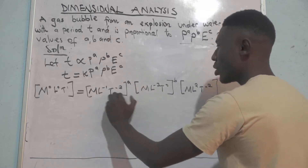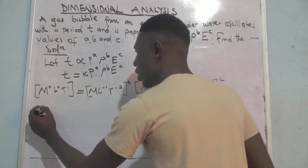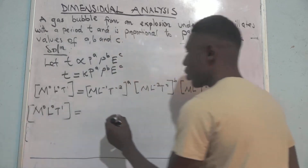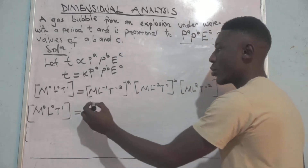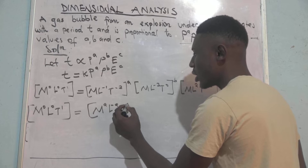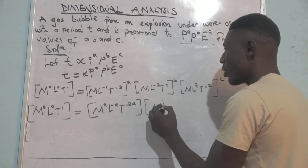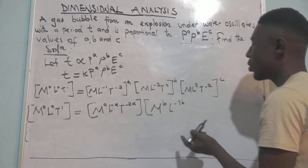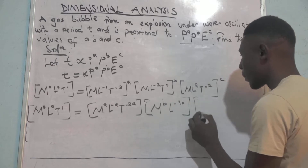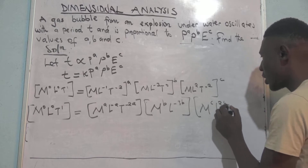Since we have the exponent a outside, we distribute it with everything inside. On the left-hand side we maintain M to the power 0, L to the power 0, T to the power 1. On the right-hand side this gives us M to the power a, L to the power negative a, T to the power negative 2a, multiplied by M to the power B, L to the power negative 3B, then M to the power C, L to the power 2C, and T to the power negative 2C.